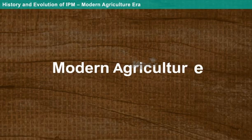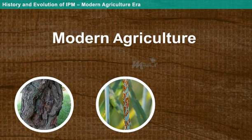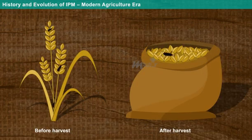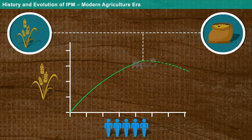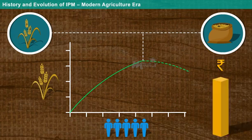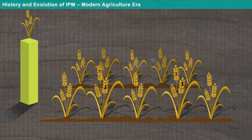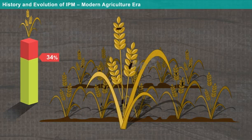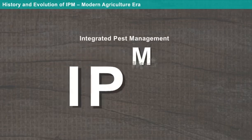After this came the modern agriculture era. Modern agriculture has been continuously facing pest issues since its inception, being attacked by a variety of insects before and after harvest. This affects total food production, which is essential to meet the demands of a growing human population, causing huge economic loss. It is roughly estimated that about 34% of overall cultivated crops are damaged due to insect pests. To avoid such losses, integrated pest management was introduced.